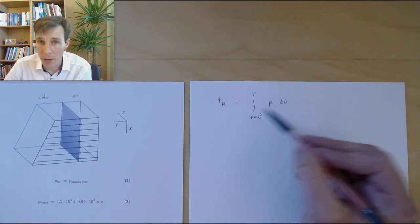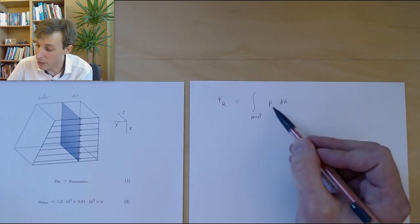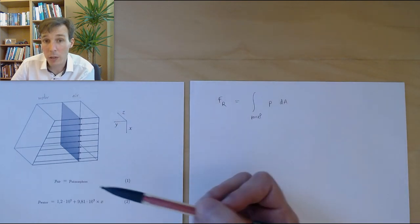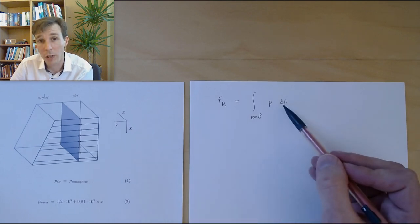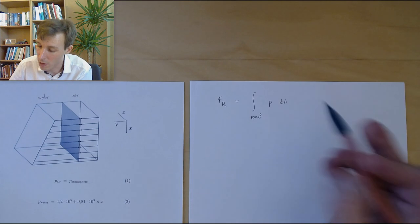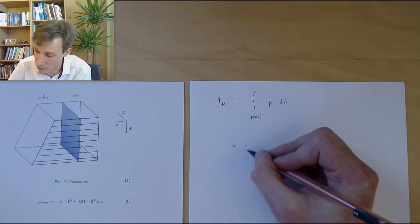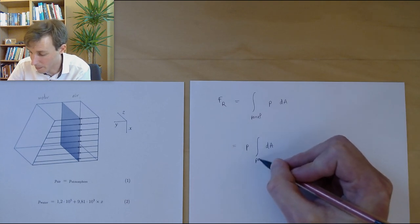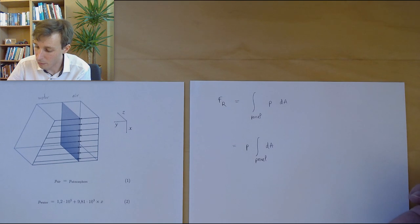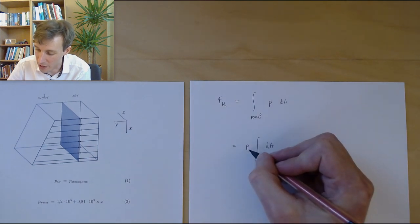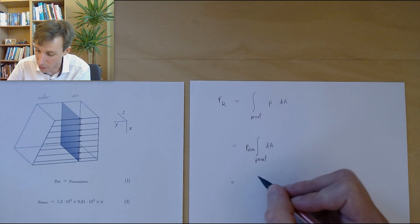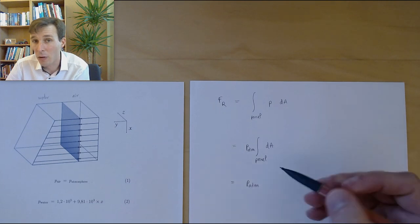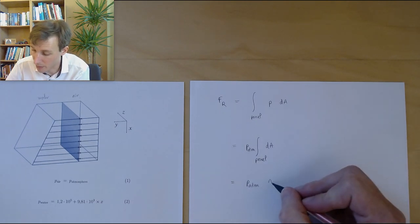This integral is very easy to calculate, because in this case P on the right side is just pressure due to the atmosphere — it's a constant, just one number. It does not change according to A, and so we can pull it out of the integral. This becomes P multiplied by the integral over the whole panel of dA, which gives P_atmosphere multiplied by A, the area of the panel.